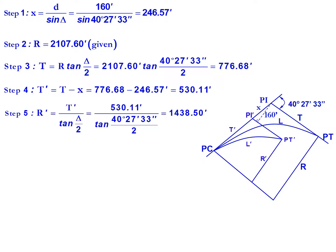We can also calculate our new radius, so that's our T prime divided by the tangent of delta divided by 2. So 530.11 feet divided by the tangent of 40 degrees 27 minutes 33 seconds divided by 2 gives us a new radius of 1438.5 feet.